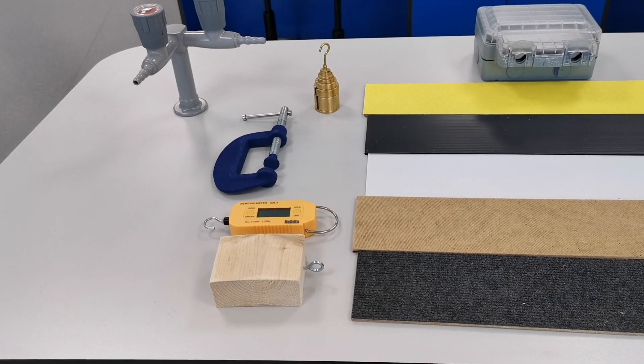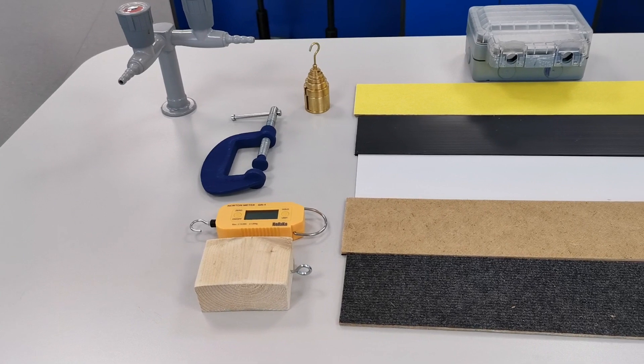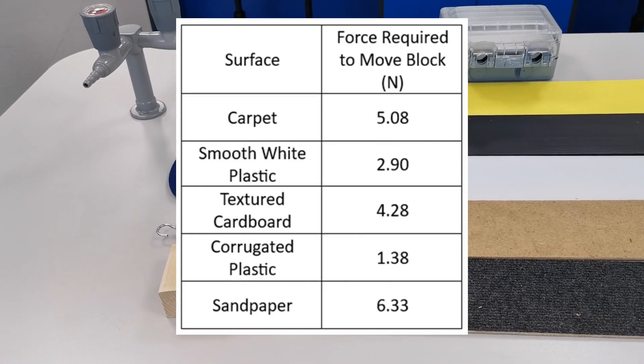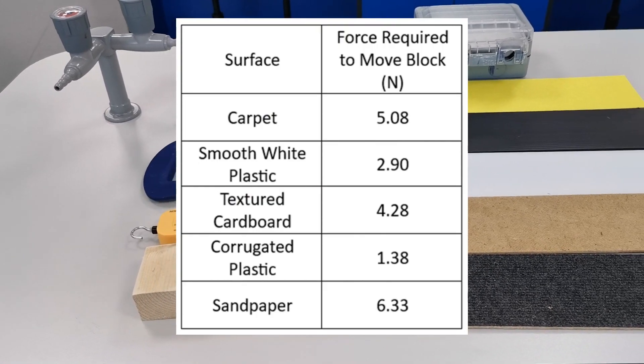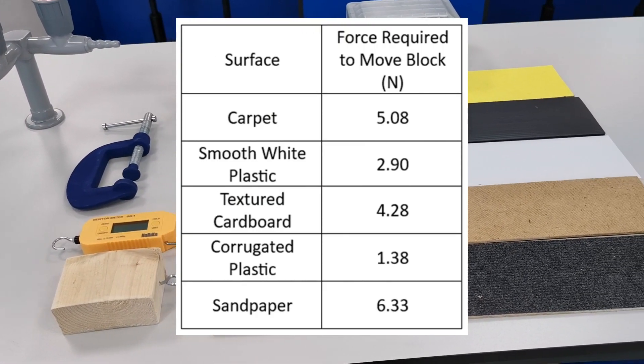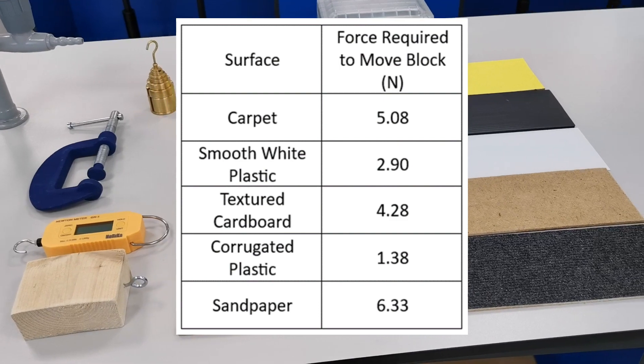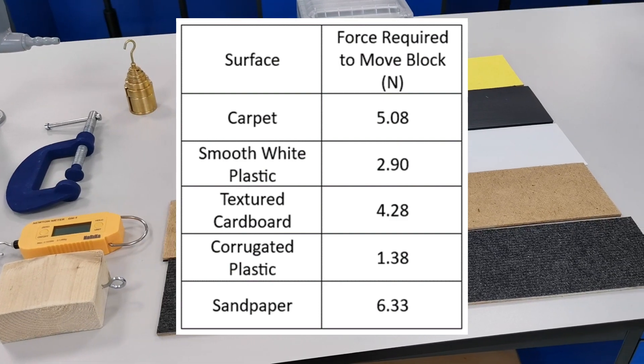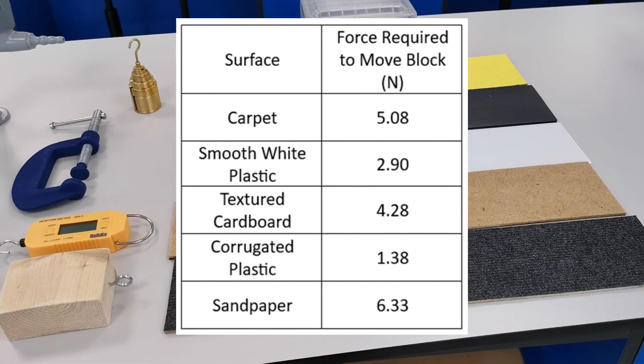As we expected, the force of friction varies depending on the texture of the surface. The rough and bumpy surfaces had a greater friction with the wooden block compared to the smooth surfaces.